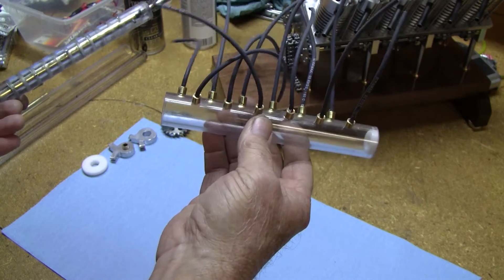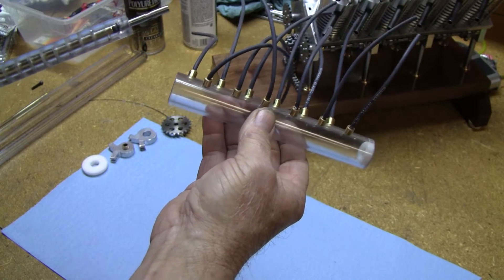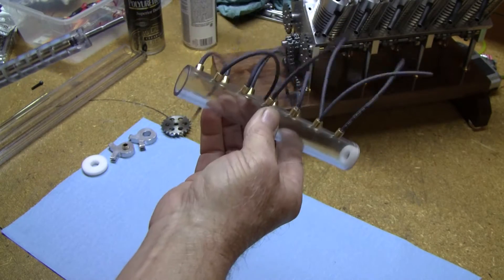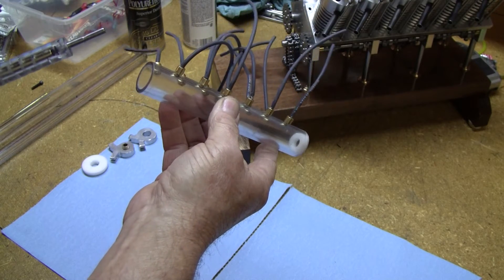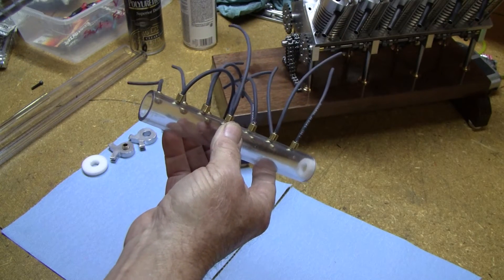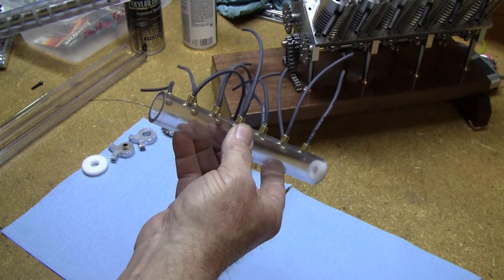It's made up of two polycarbonate tubes that I got from McMaster-Carr. There's a one inch OD with a three quarter inch ID, and there's a three quarter inch OD with a quarter inch ID.